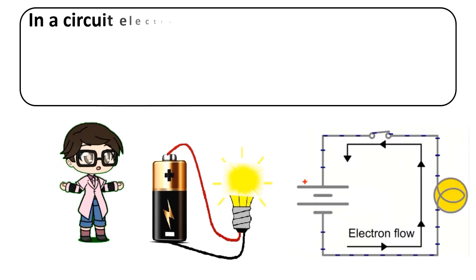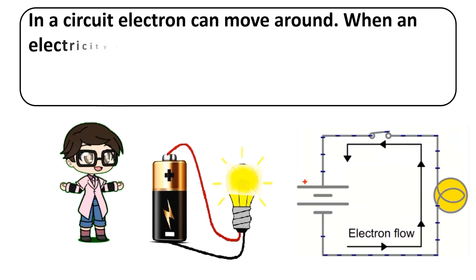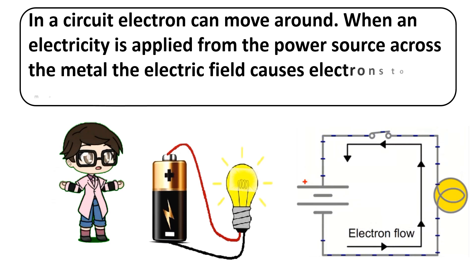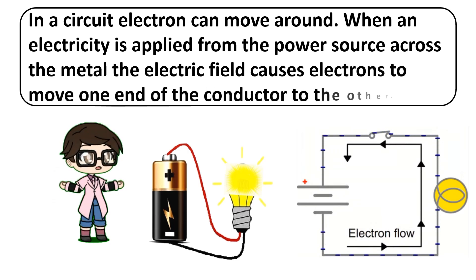In a circuit, electrons can move around when electricity is applied from the power source across the metal. The electric field causes electrons to move from one end of the conductor to the other.